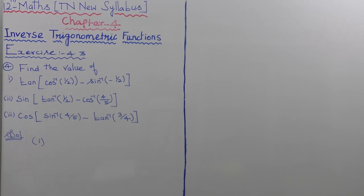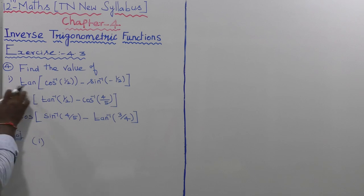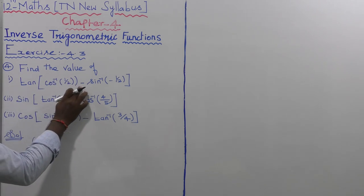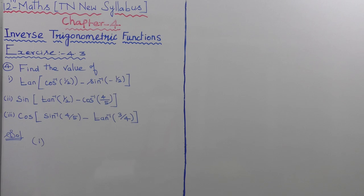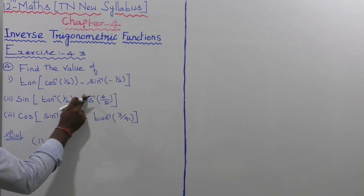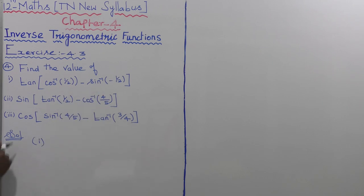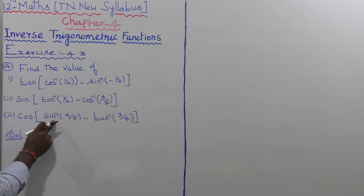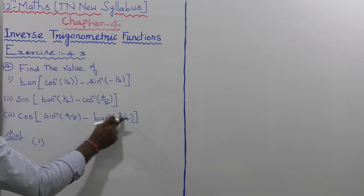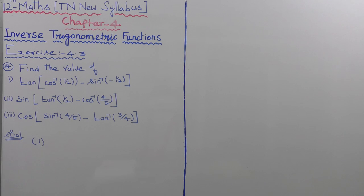Exercise 4.3, fourth sum. Find the value of: first substitution - tan inverse of cos inverse of 1 by 2 minus sin inverse of minus 1 by 2; second substitution - sin of tan inverse of 1 by 2 minus cos inverse of 4 by 5; third substitution - cos of sin inverse of 4 by 5 minus tan inverse of 3 by 4.